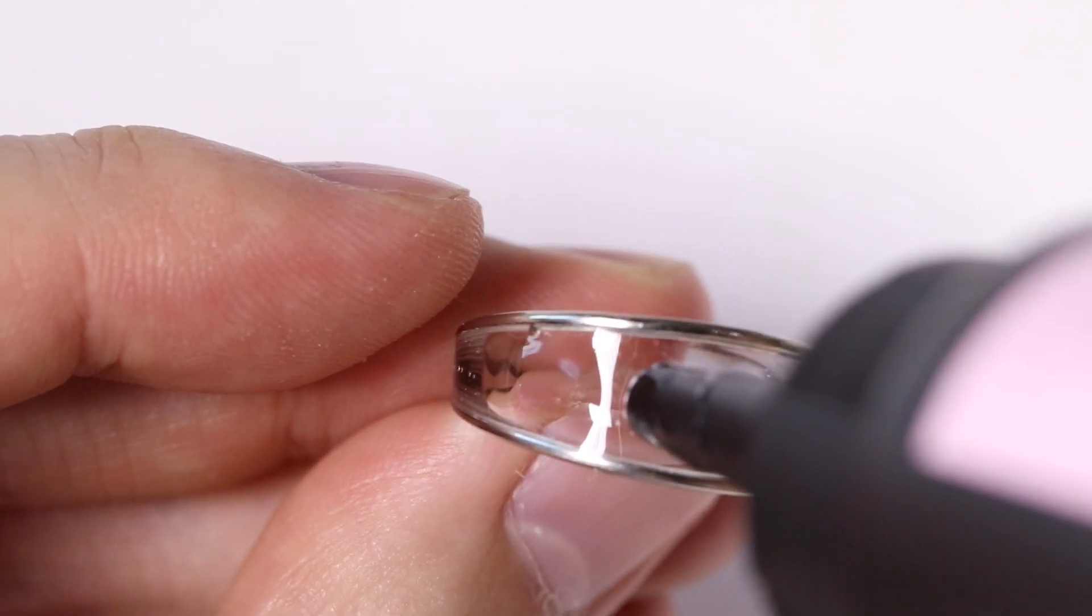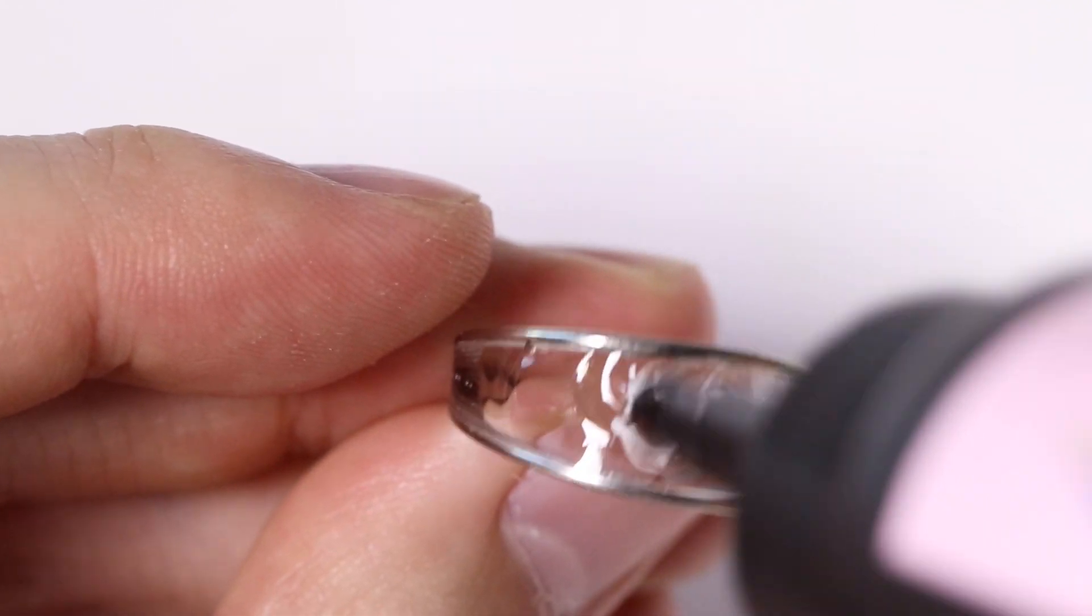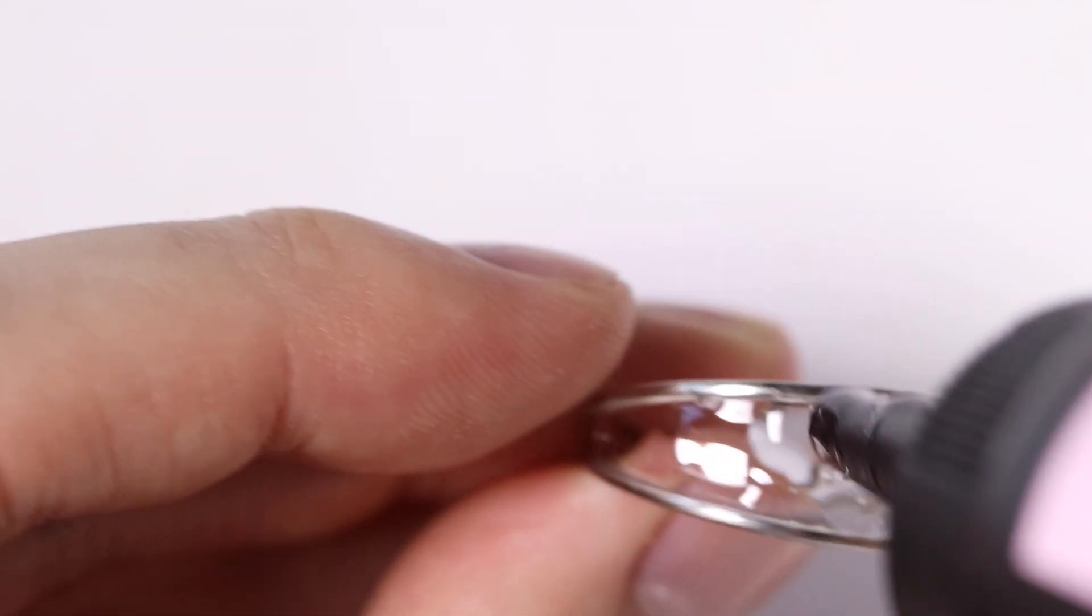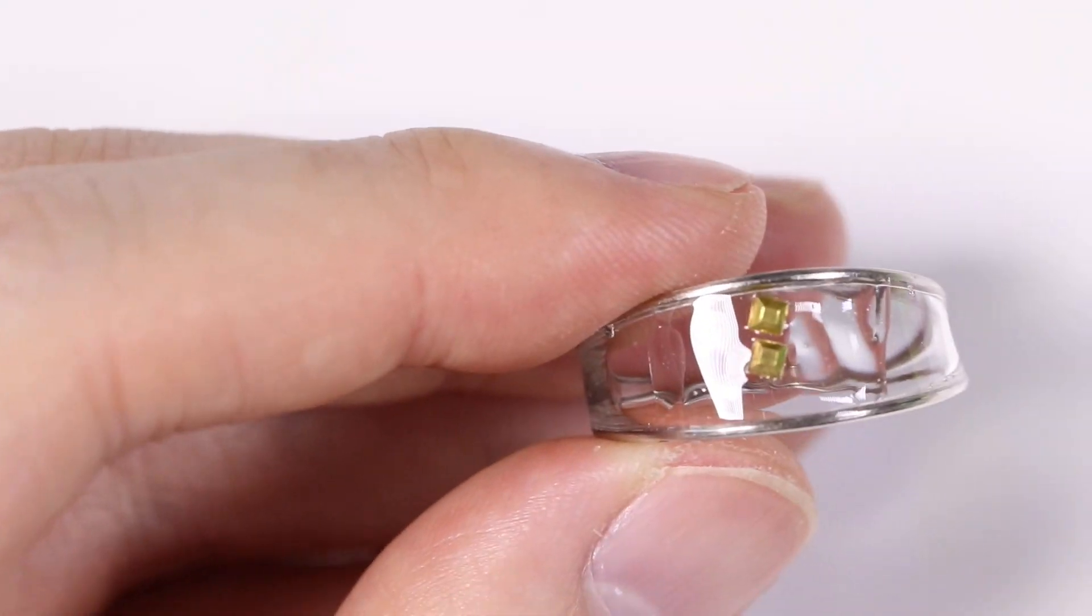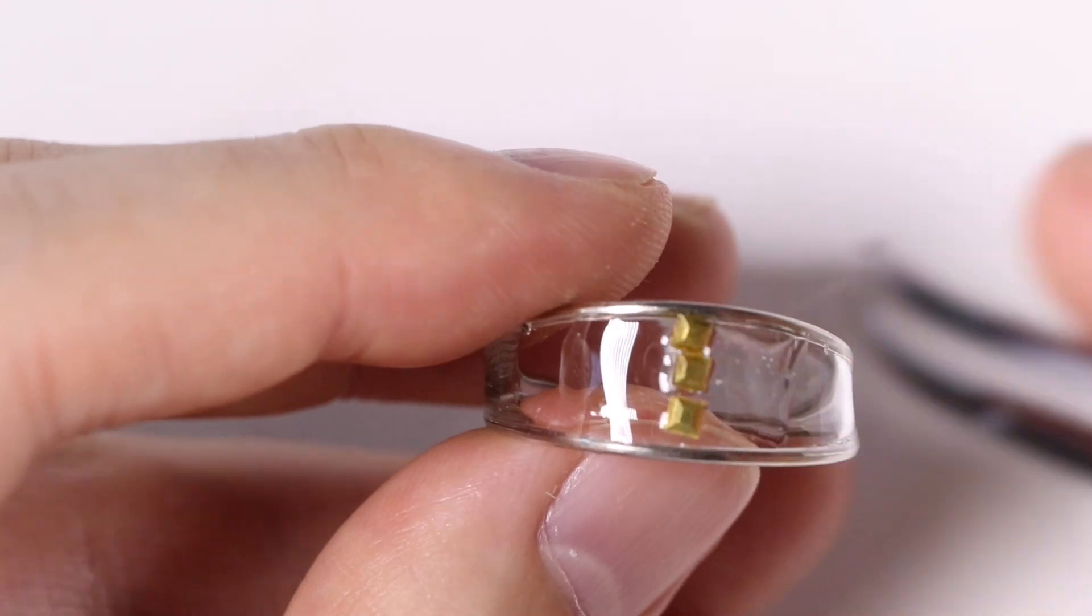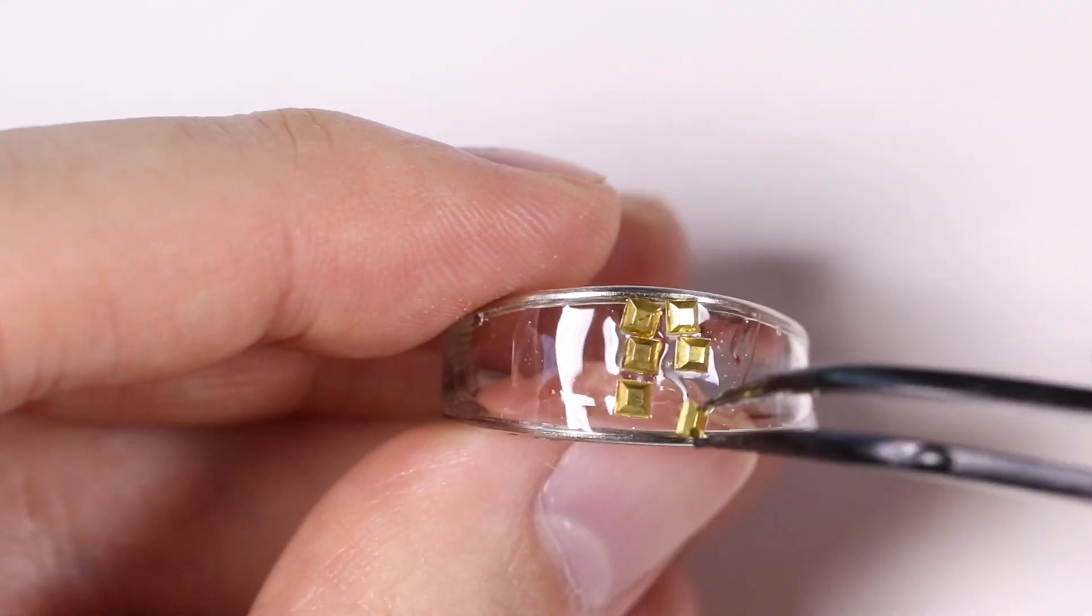And I want to do something simple for the third one. So put some UV resin in the middle. Next I decorated with these little square studs and I put 9 of them just to make it very simple and clean.